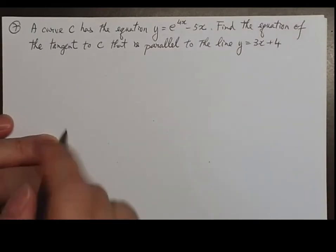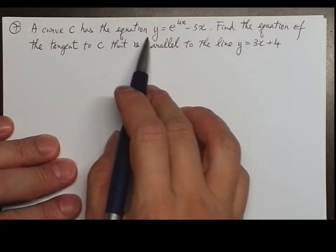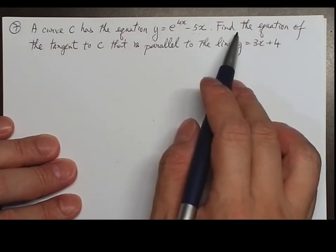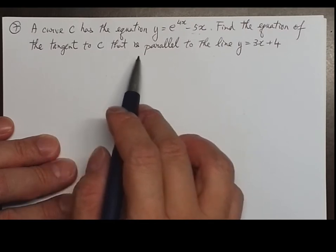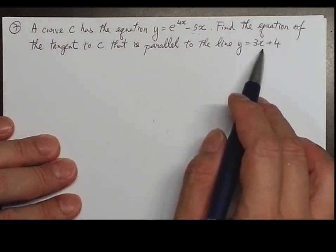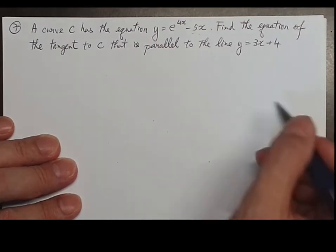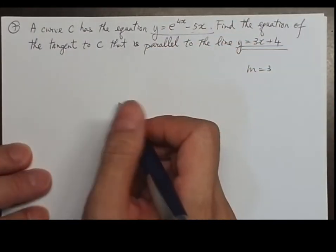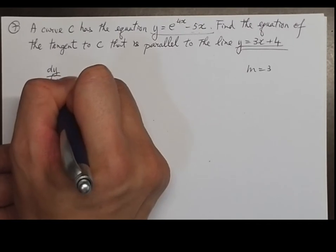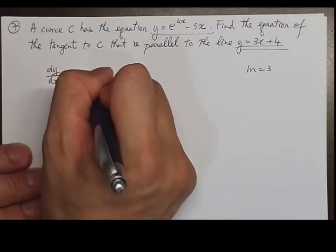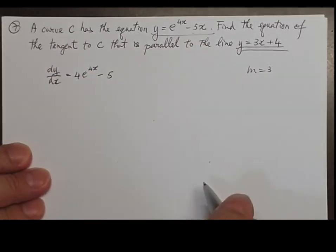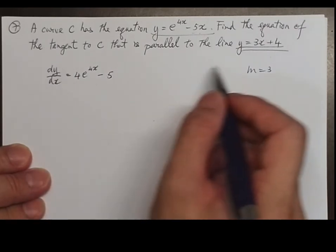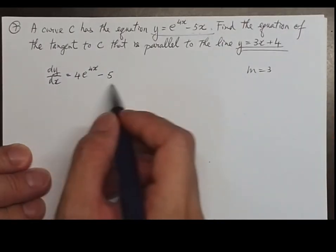Question 7 is a challenge question. A curve C has the equation y equals e to the 4x minus 5x. Find the equation of the tangent to C that is parallel to the line y equals 3x plus 4. The slope of that line is 3, so we differentiate: dy/dx equals 4e to the 4x minus 5. Since the tangent is parallel, the slope equals 3.